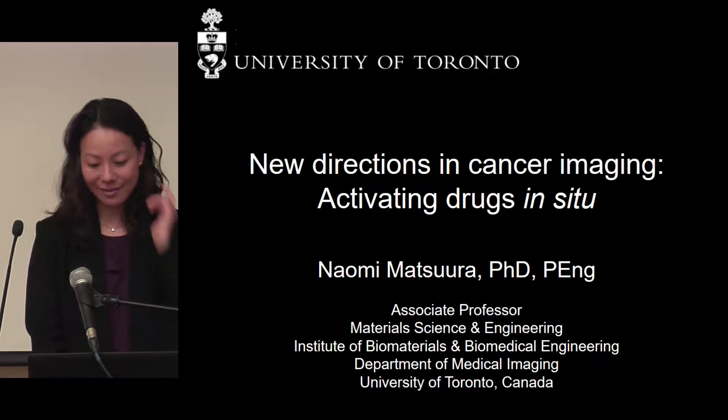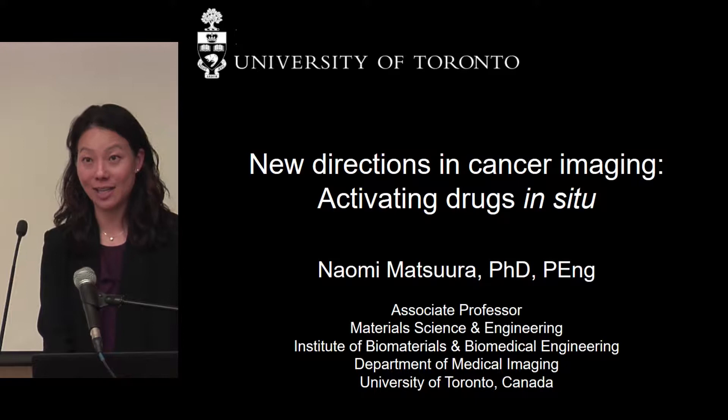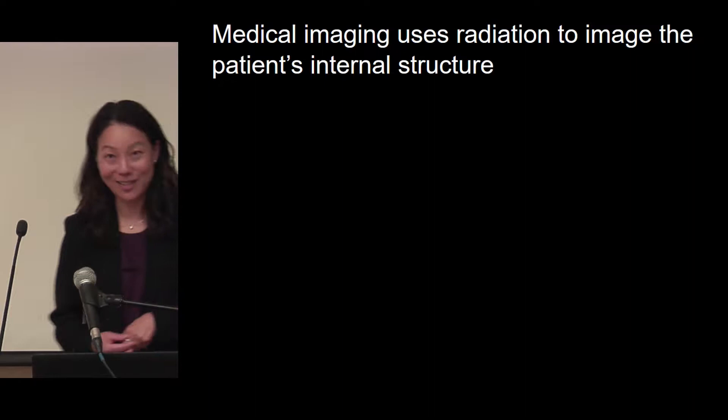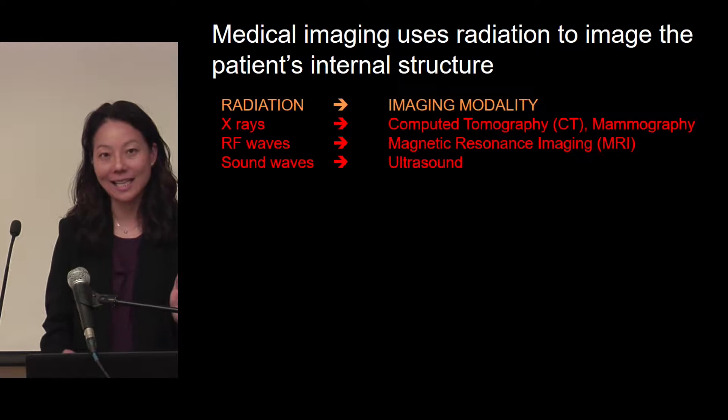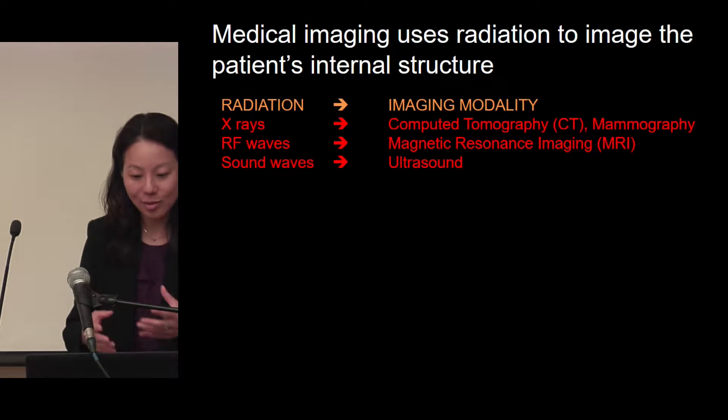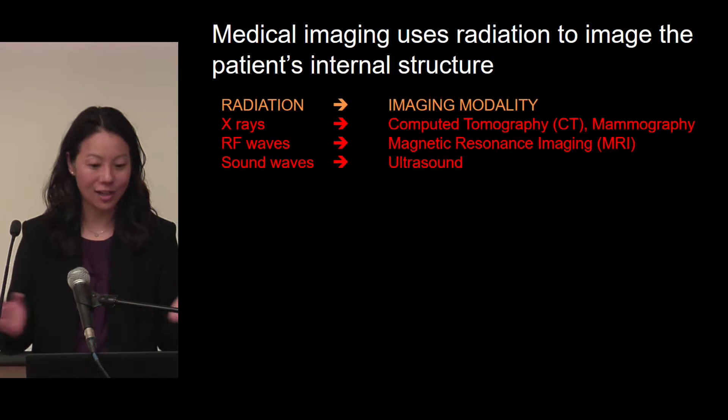For those of you who are not familiar with medical imaging, it simply uses radiation to image a patient's internal structure in order to diagnose and help treat disease. The key point is that for each imaging modality, it's associated with a certain kind of radiation. X-rays are used for computed tomography or CT, mammography, and planar radiography. RF waves are the radiation used for MRI, and sound waves are used for ultrasound.